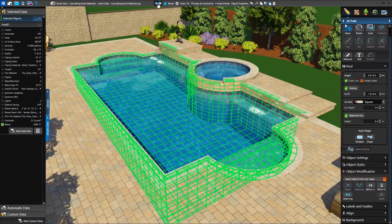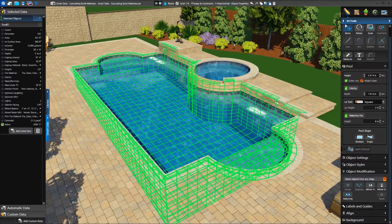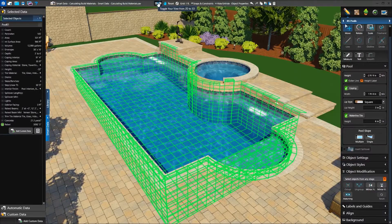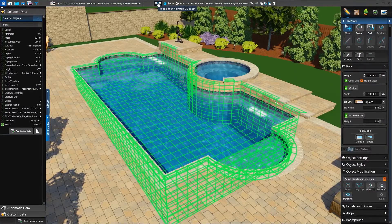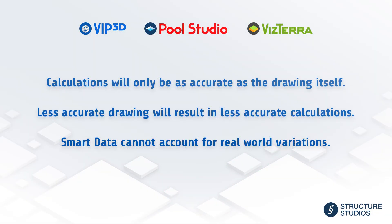For example, clicking the eye to the left of Rebar displays what is currently calculated in green. These highlights appear in both 2D and 3D, giving us another way to review these calculations. It's important to note that these calculations will only be as accurate as the drawing itself. If shapes are drawn in a way that makes them overlap or not line up properly, values will not be calculated as accurately. Less accurate drawing will result in less accurate calculations. Ensure your drawing is clean to get the most accurate data.